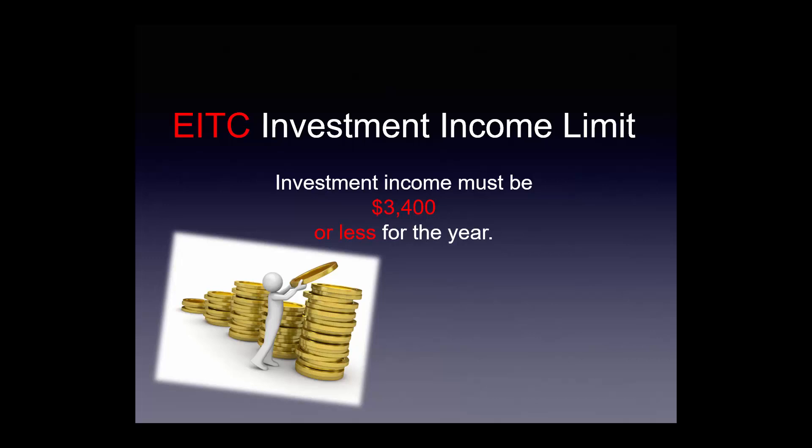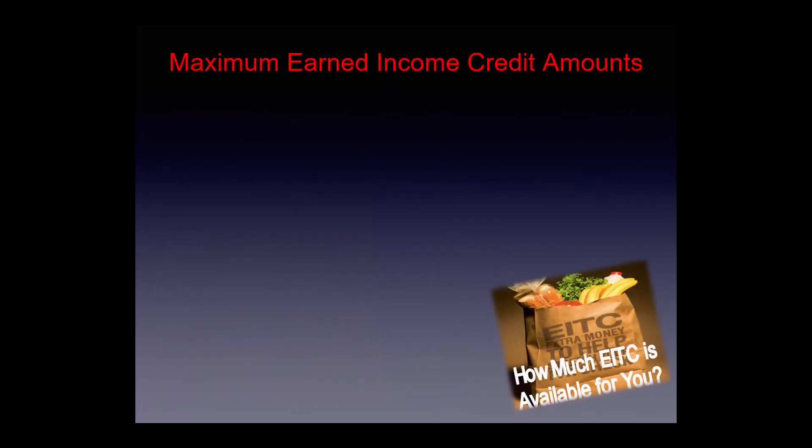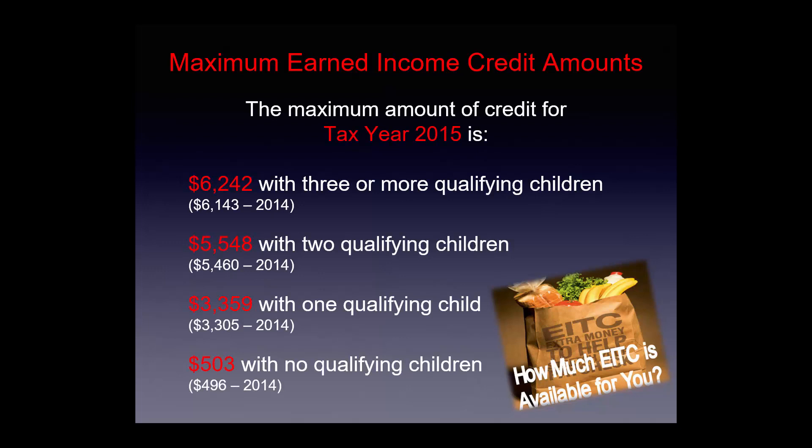The EITC investment income limit remains $3,400 or less for the year. The maximum earned income credit amounts for 2015: $6,242 with three or more qualifying children (up from $6,143 in 2014), $5,548 with two qualifying children, $3,359 with one qualifying child, and $503 with no qualifying children, up from $496 for 2014.